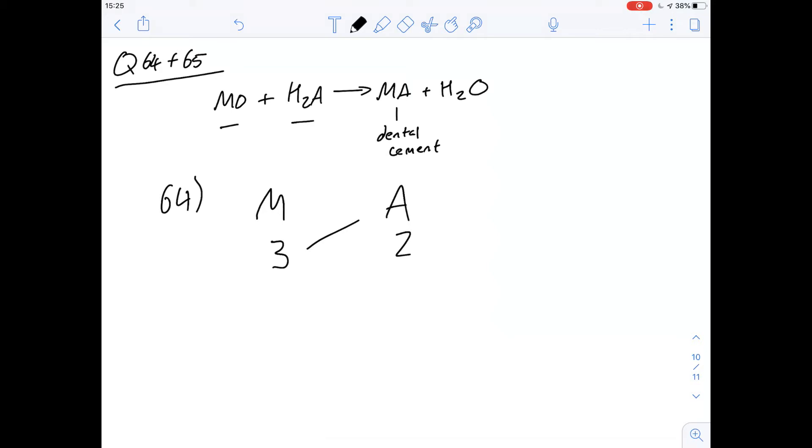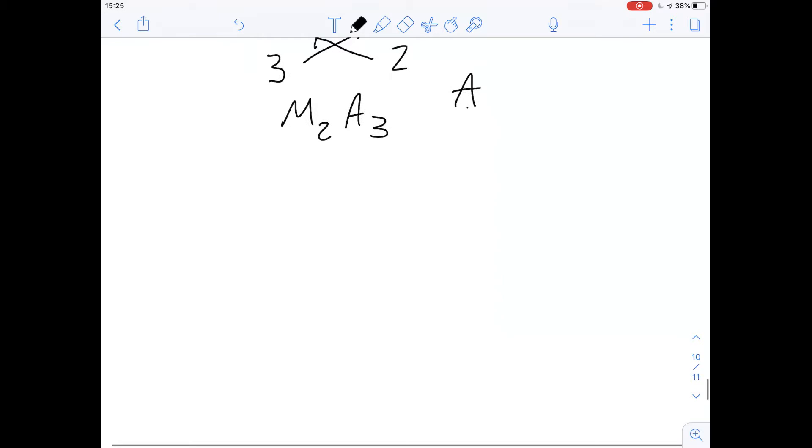So we've got a metal and an anion. The metal has a valency of three and the anion has a valency of two and they swap over like this. So we end up with M2A3 and that gives us an answer of A for question 64.